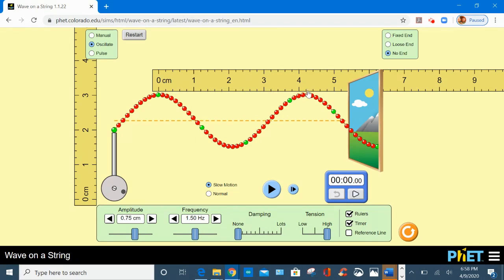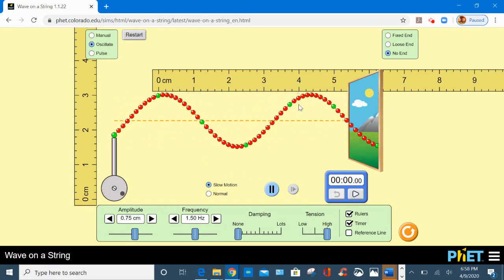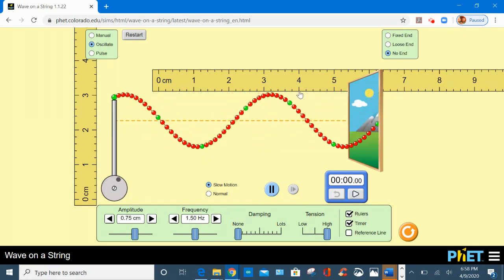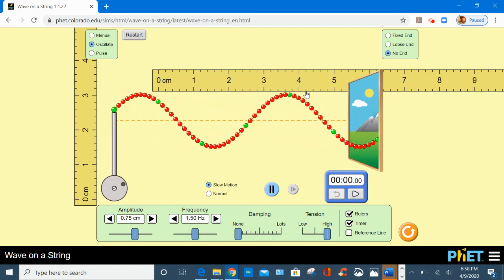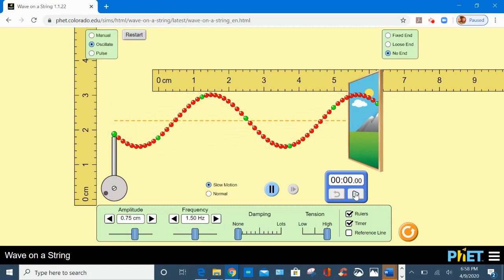Could be any point, but my choice will be this one right here. So what I am going to do, I am going to move this wave very slow, and I am going to keep my eye on this point. When it gets there, I am going to start my timer, and I am going to count up to 10.